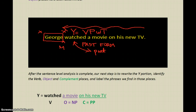Very often complements are going to answer questions like: where did George watch a movie? Or when did George watch a movie? Or how did George watch a movie? Or how much did George watch a movie? Those kinds of answers are going to be complements. But 'what did George watch' is going to be the object.